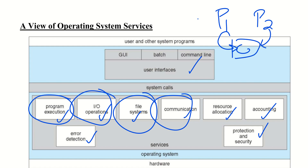Next is resource allocation. Resource allocation means when multiple users or multiple jobs are running concurrently, resources must be allocated to each. In a multi-programming environment, multiple jobs run and resources such as CPU cycles, main memory, file storage, and I/O devices must be allocated appropriately.